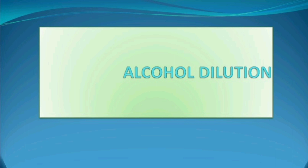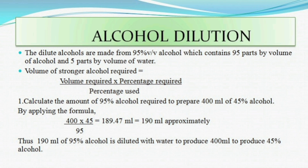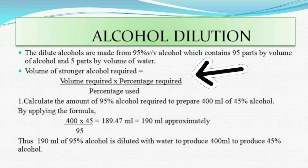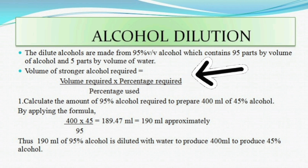In alcohol dilution, we will dilute a concentrated alcohol. If you have a stock, we will mix a little water in the stock. A dilute alcohol is prepared as 95% V/V alcohol — that means there are 95 parts by volume of alcohol and 5 parts by volume of water. The formula is: Volume of Stronger Alcohol Required = (Volume Required × Percentage Required) ÷ Percentage of Stock Solution.